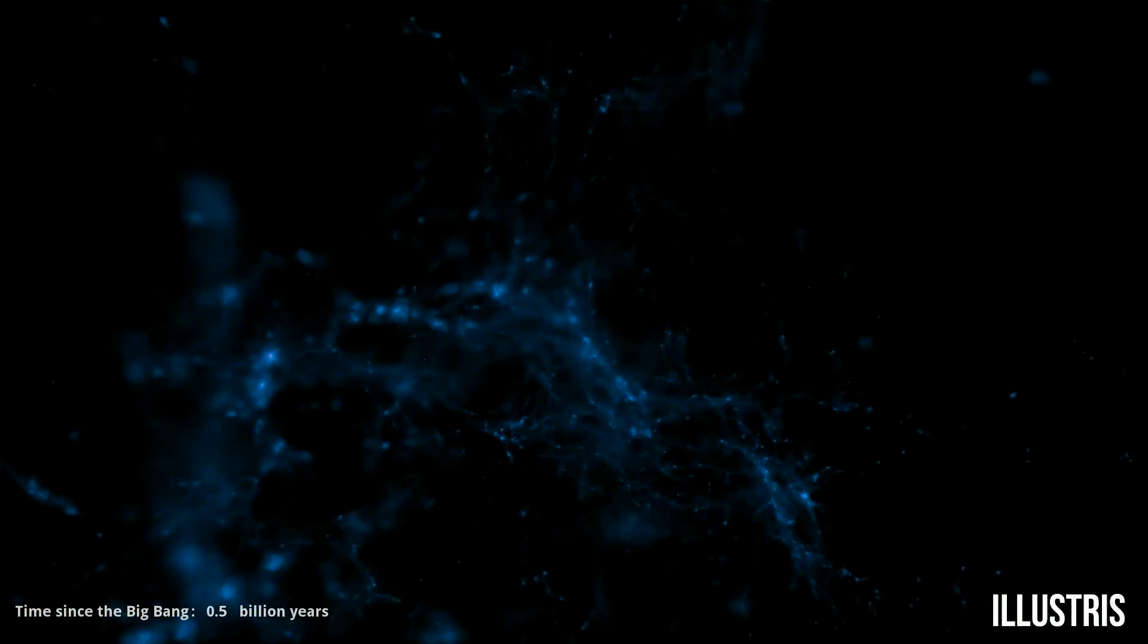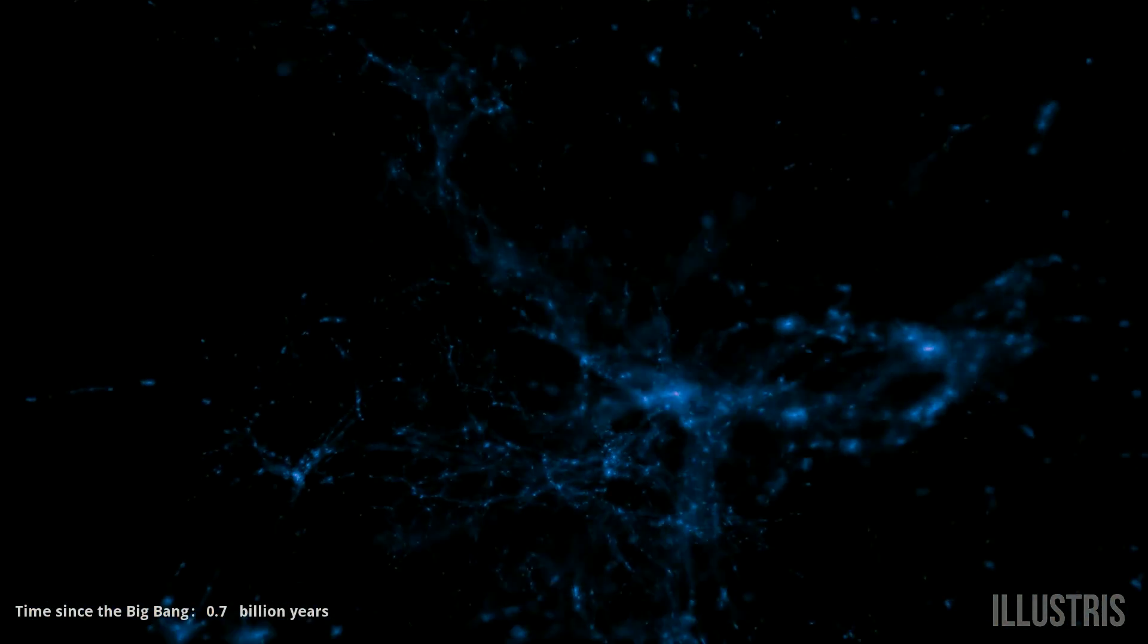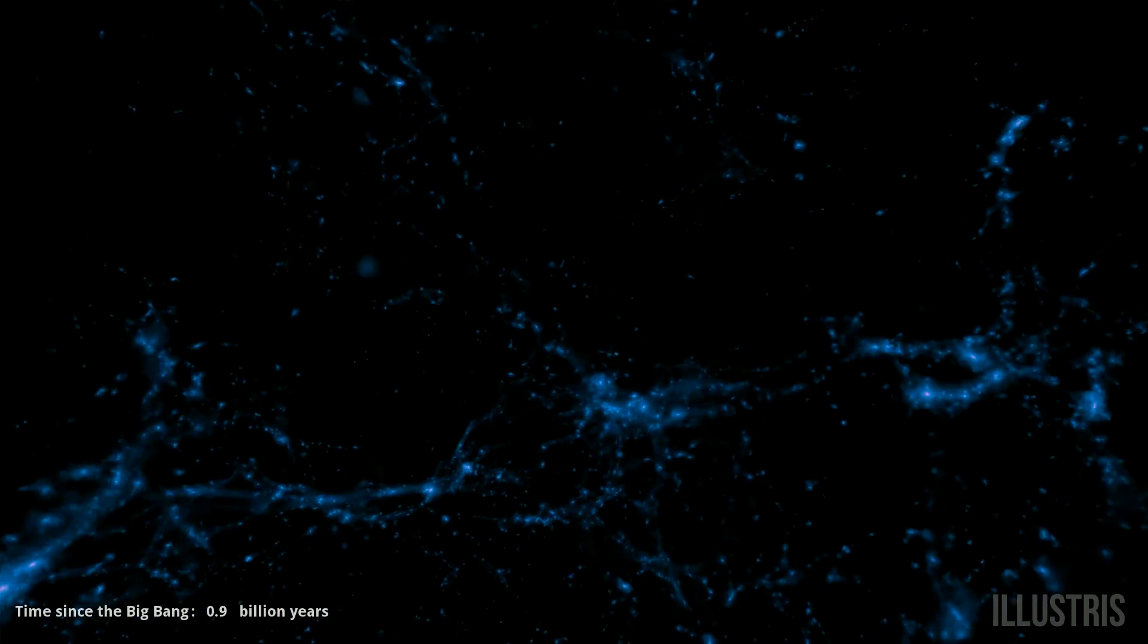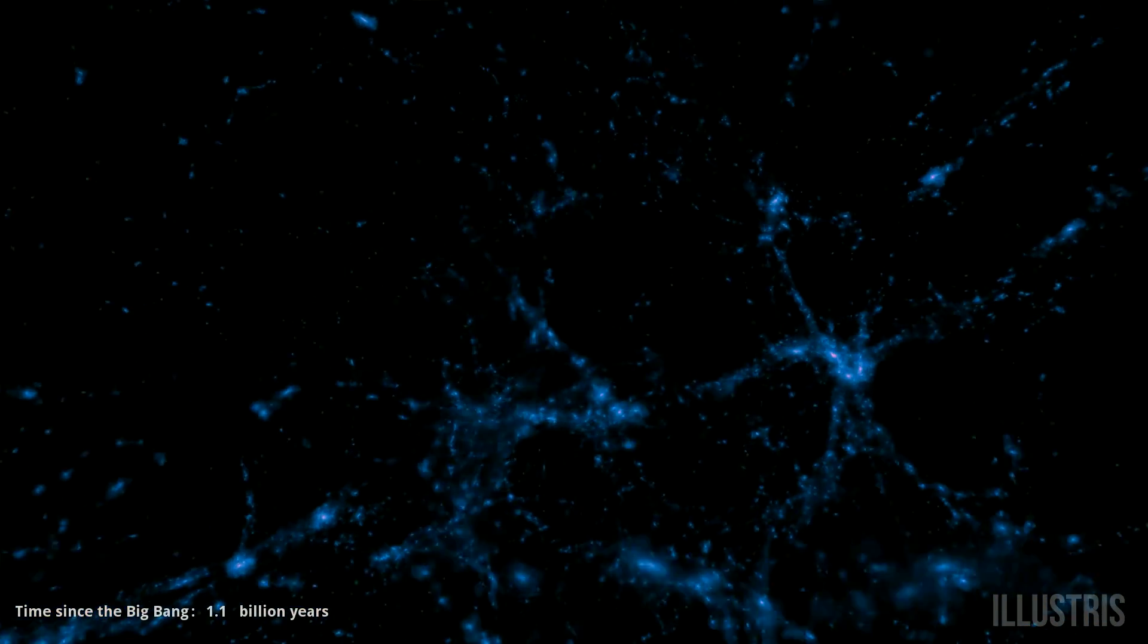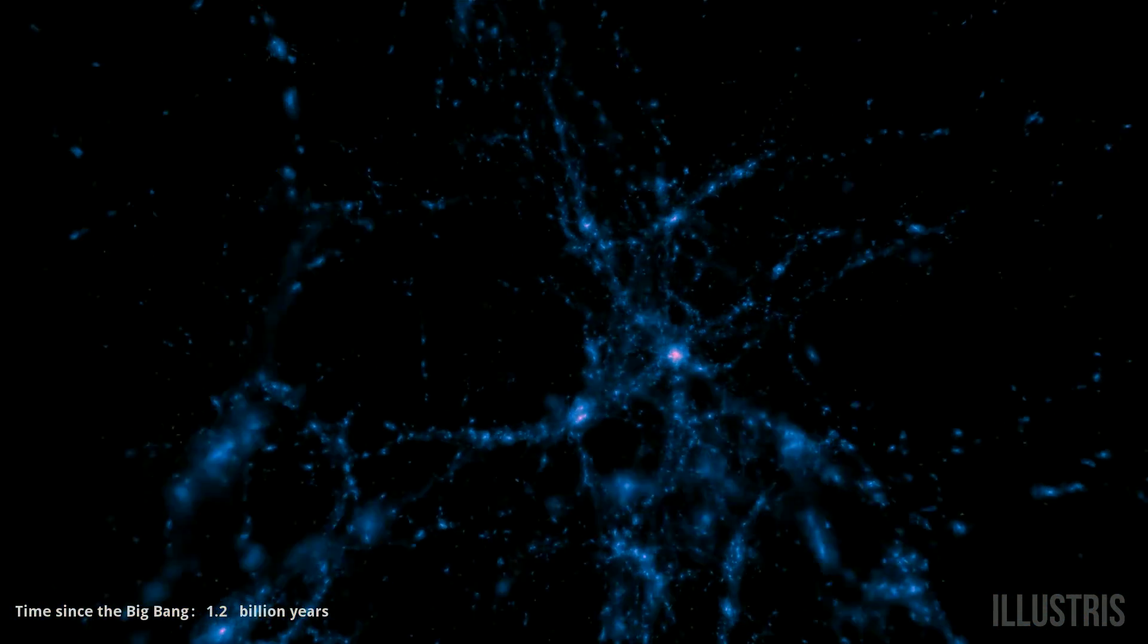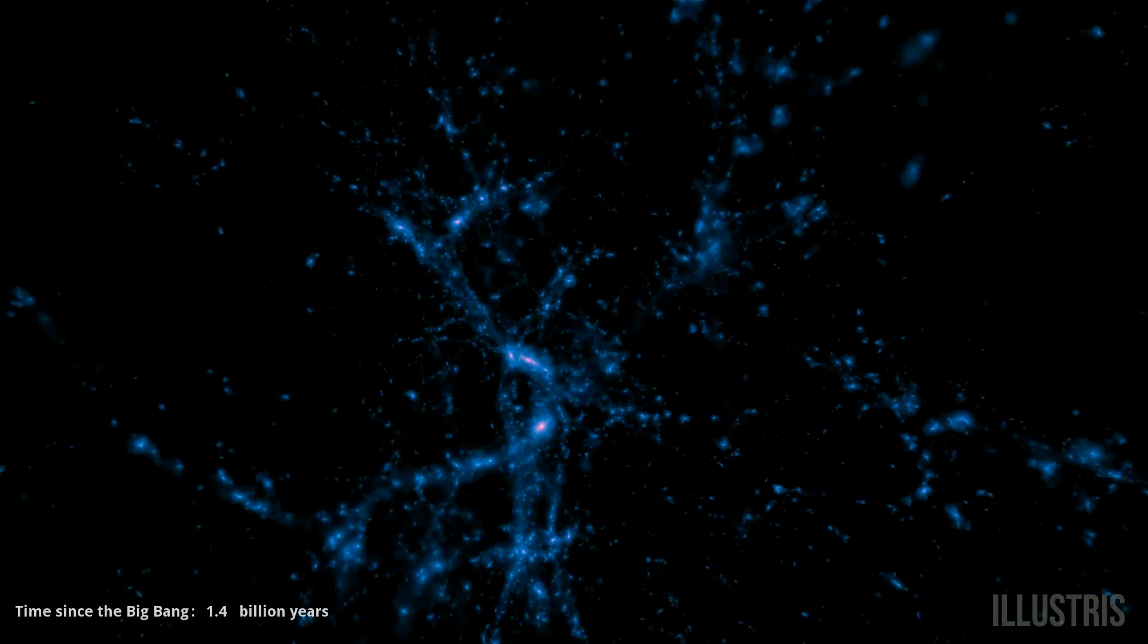This is the most accurate simulation model ever created of how our universe was formed. The cosmic web, a network of dark matter bound together by gravity. The pink is where the dark matter is densest.